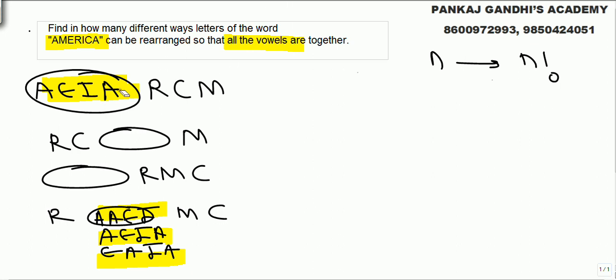So what we know is, first of all, what should come together consider it one thing. They will always go together - 1, 2, 3, 4. Four things at four places can be arranged in 4 factorial. So these 4 factorial arrangements will be there.